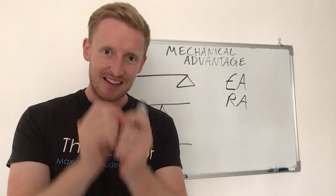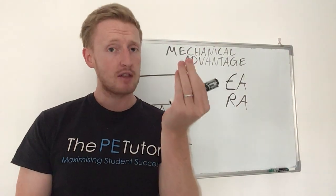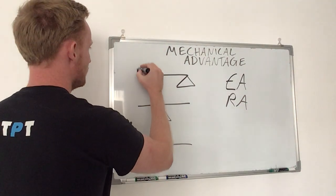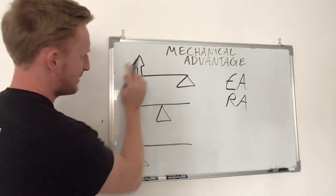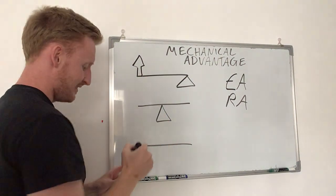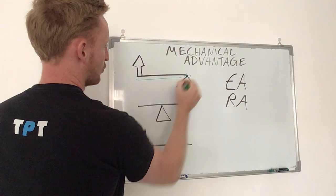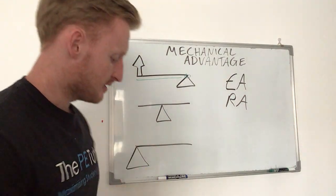Now the effort arm is the distance from where the effort is applied to the lever system and the fulcrum. So the distance between where the effort is applied, obviously we use that arrow to denote effort, and it's the distance between where that has been applied towards the fulcrum point.